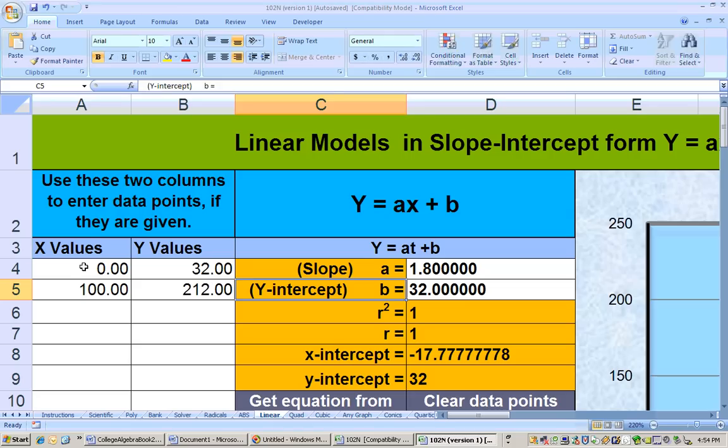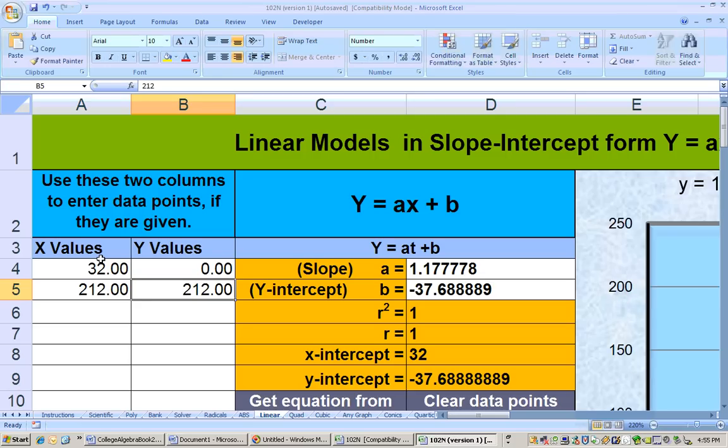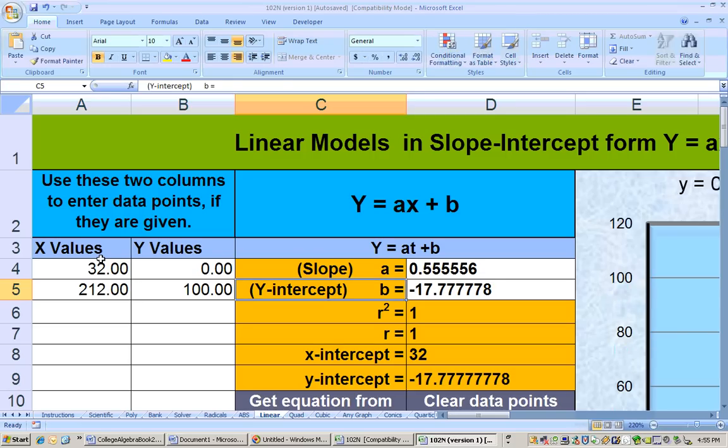you get the equal, well actually they were backwards from that. Let's see, it was 32 comma 0, and the other point was 212 comma 100. There's how the points were, and there's the equation right there.